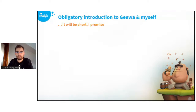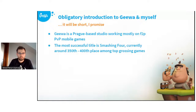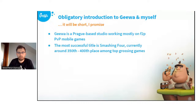Starting with an obligatory introduction: Jiva is a Prague-based studio working mostly on free-to-play games. It originally started doing Flash games, but now we are focusing on Android and iOS. Our biggest title is Smashing 4. The game is currently around 300 to 400 in the top-grossing charts — it's hard to measure because combining App Store and Play Store data is difficult, but that's our assumption.